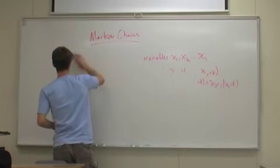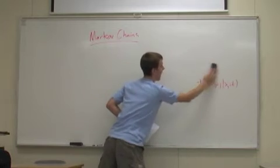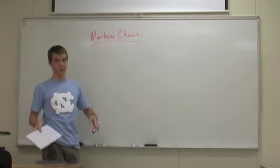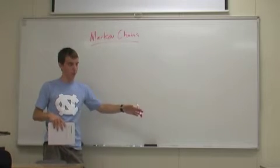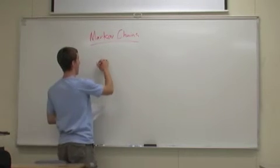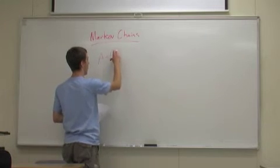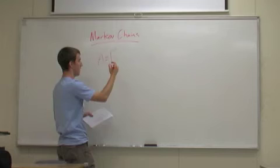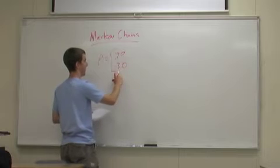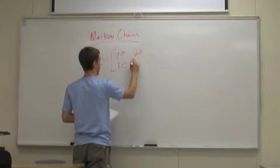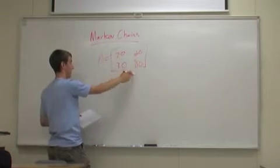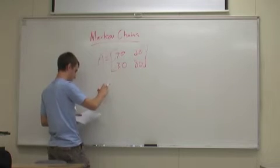Let's do a typical example. Suppose a company hires researchers to study their brand of cereal, and they want to see if customers buy brand A one week, what the probability is that they switch to brand B. They find that if you buy brand A, there's a 70% chance you stick with brand A and a 30% chance you go to brand B. If you buy brand B, there's an 80% chance you stay with brand B and a 20% chance you go to brand A.